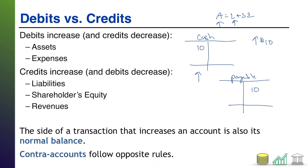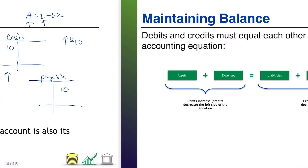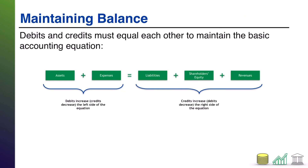Throughout accounting you encounter things known as contra accounts. These appear on all the financial statements — there are contra assets, contra equity, contra revenue. Whenever you encounter a contra account, just know it does the opposite of the normal rules. A contra asset: debits would decrease and credits would increase. It does the opposite — just something to tuck away for later.